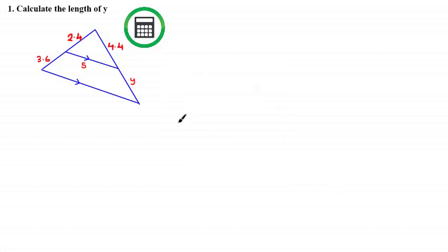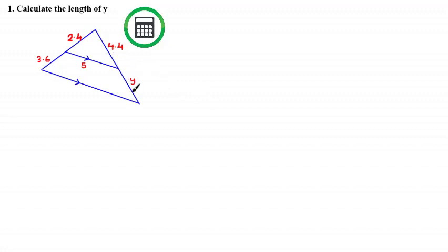Welcome back. Hope you had a decent attempt at the question. Let's have a look at the solution. We've been given a shape with different measurements and asked to calculate the value of Y. You should be able to notice that there is a smaller triangle within the larger triangle. If we can determine that these two triangles are similar, we may be able to find the value of Y by using scale factors.